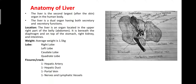Dear students, the liver is covered with a fibrous layer known as Glisson's capsule. Glisson's capsule divides the liver into a right lobe and left lobe by attachment of the falciform ligament. There are two further accessory lobes arising from the right lobe and left lobe at the visceral surface of the liver — that is, the quadrate lobe and caudate lobe.